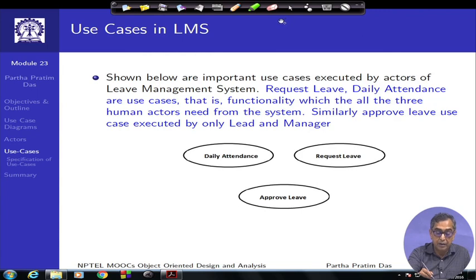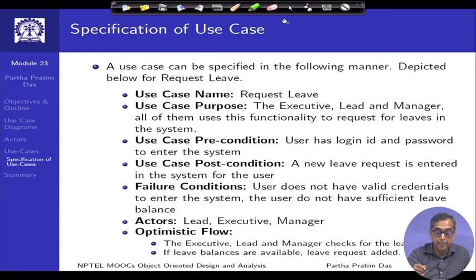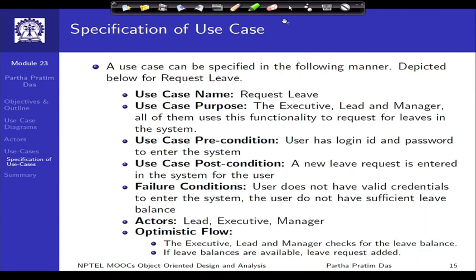UML is grossly a graphical language, so every concept and every primitive we talk of has an iconic representation. Along with certain textual annotations, it is primarily these iconic primitives which tell us exactly what is being represented and what is going on in the system.